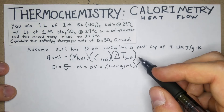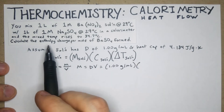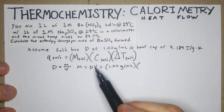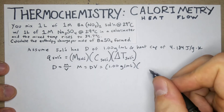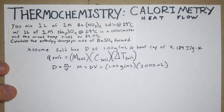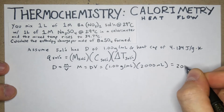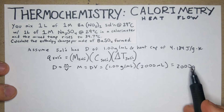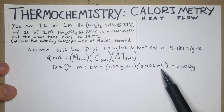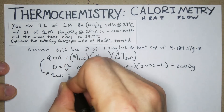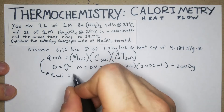We have one liter of each solution, so the whole solution is two liters, which is 2000 mL. Since our density is in g/mL, the units are compatible, and mass = 1.00 × 2000 = 2000 grams.